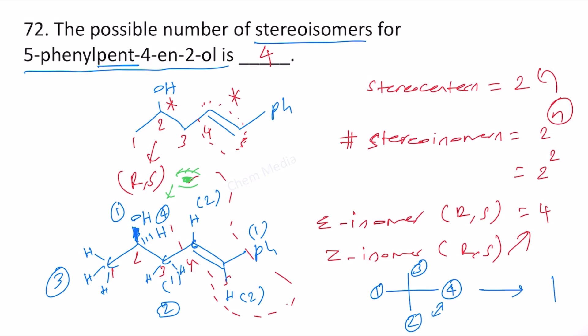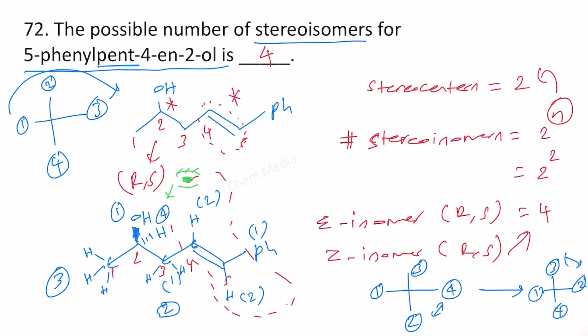After one swap: 1 here, 4 here, 3 here, 2 here. We do another swap because when going clockwise or counterclockwise the numbers must be sequential — 1, 2, 3 or 3, 2, 1 — it cannot be 1, 3, 2. After the second swap: 1, 2, 3, 4. Now we can go clockwise 1, 2, 3 — this means this is R. Since we performed 2 swaps, the original configuration is also R.